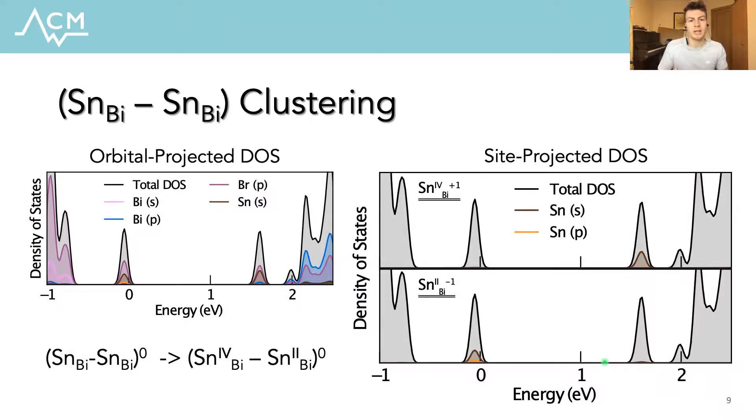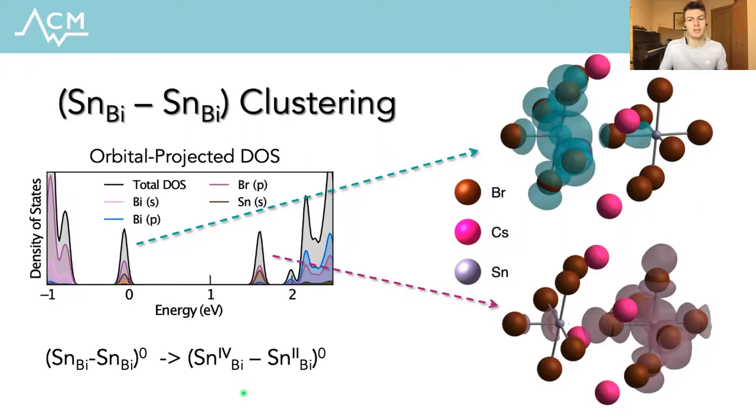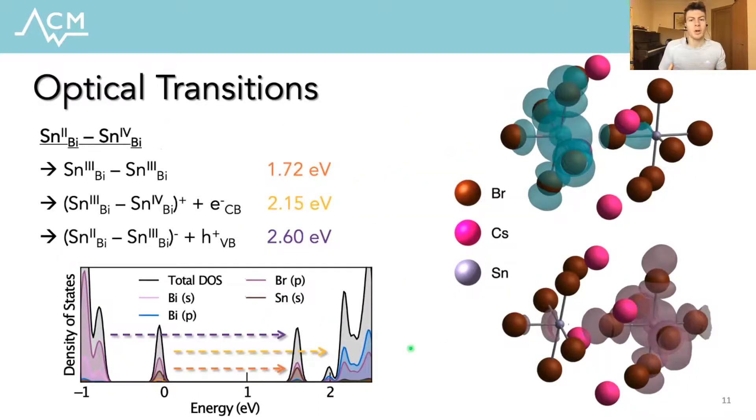From analyzing the orbital projected and site projected density of states as well as performing beta charge density partitioning, we were able to confirm that the double substitution complex indeed corresponds to the disproportionate tin, acting as a mixed valency dopant in this system. So in a neutral state, this species gives rise to two electronic states within the band gap arising from strong tin s and bromine p hybridization. So the lower energy fully occupied state is associated with the tin 2 plus site, while the higher energy unoccupied level is associated with tin 4 plus. Given this electronic structure, we calculated the energies of the related optical excitations corresponding to electronic transitions from the occupied lone pair state to tin 4 plus, from tin 2 plus to the conduction band minimum, and indeed from the valence band maximum to the unoccupied tin 4 plus level.